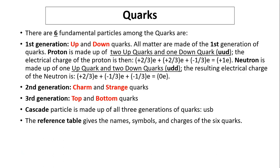Quarks, there are six fundamental particles among the quarks. First generation is up and down quark. All matters that we know of are made of the first generation of quarks. For a proton, you have up, up, down. That's very important, the charge on the proton. Look at your reference table. The charge on the up is positive two-thirds, plus another positive two-thirds, plus a down, down is negative one-third. So when you add it together, you'll have the charge of a proton is positive one.